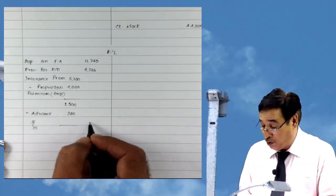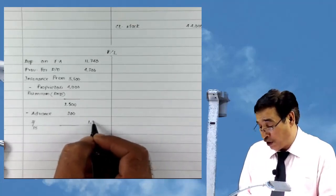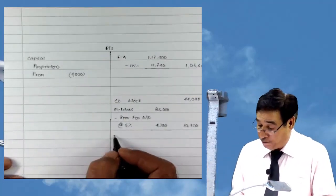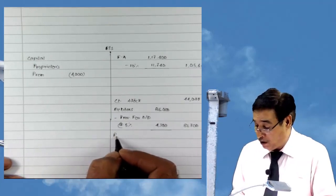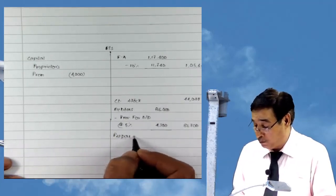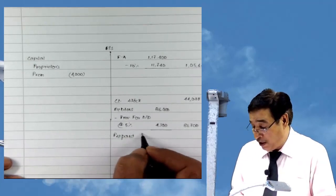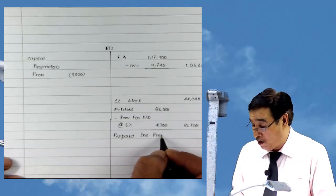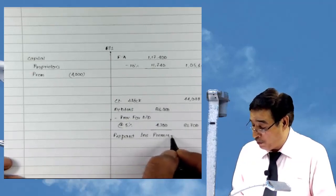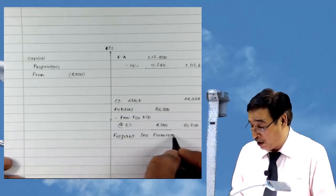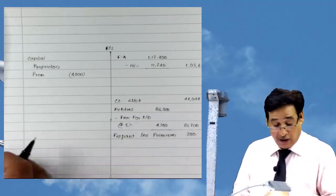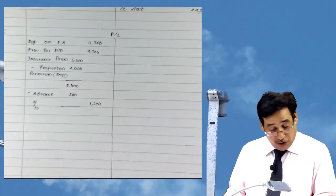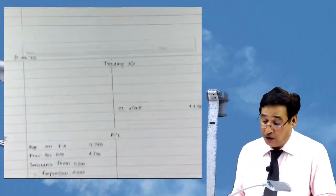One-fifth of 1,500 makes 300. So 1,200 will be the amount reflected in P&L, and this advance will be presented in the balance sheet as prepaid insurance premium of 300. This is the interesting point in this question. No further information is there, so now we can proceed with the question.